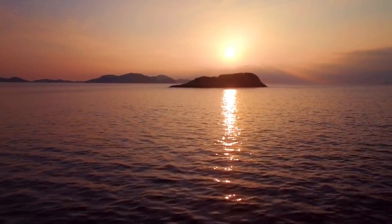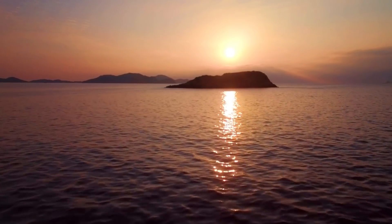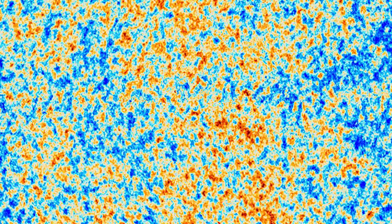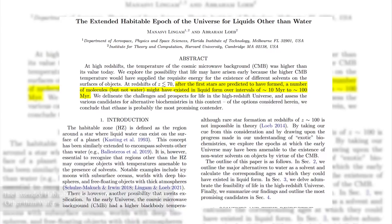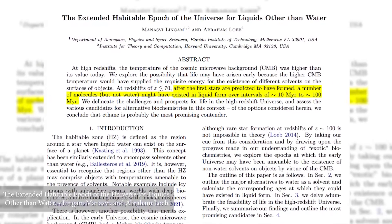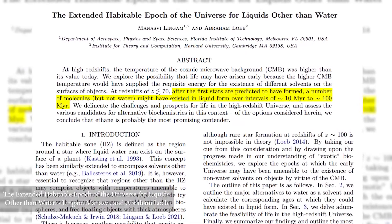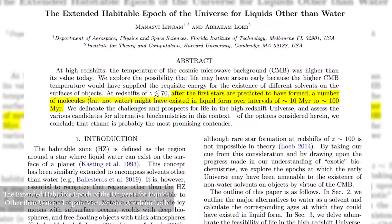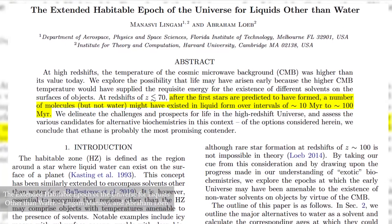Water may not be the only liquid that can support the chemistry of life. If so, could alternative liquids exist in the early universe as a result of warming by the cosmic radiation background alone? In a new paper with Manasvi Lingam, we showed that ammonia, methanol, and hydrogen sulfide could exist as liquids just after the first stars formed, and that ethane and propane might be liquids even later.